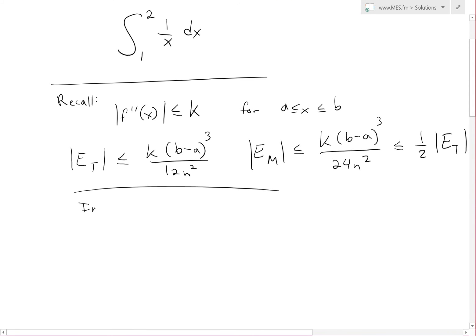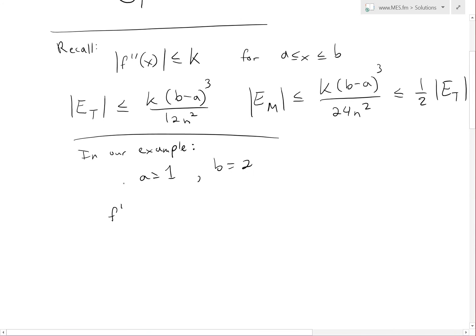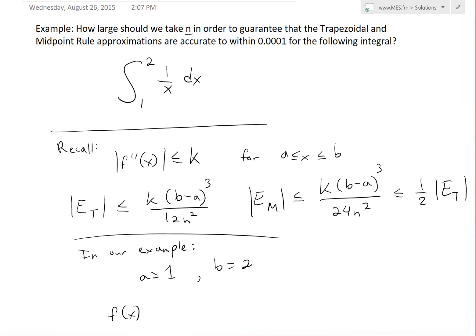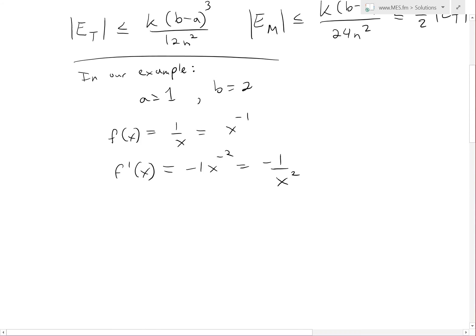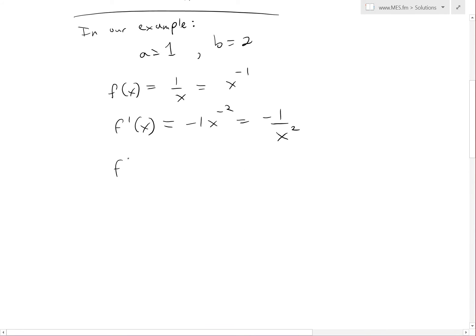In our example, a equals 1 and b equals 2. Looking at f(x), the integrand is 1/x, which equals x^(-1). The first derivative f'(x) equals -x^(-2), which equals -1/x². The second derivative f''(x) equals 2x^(-3), which equals 2/x³.